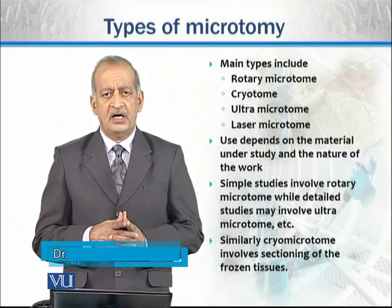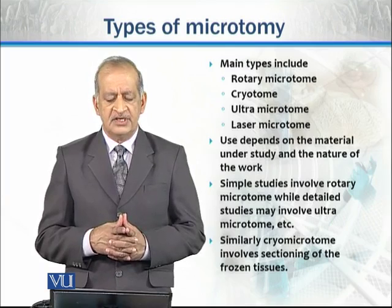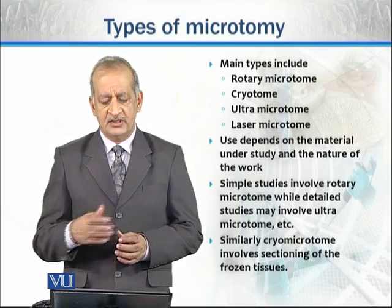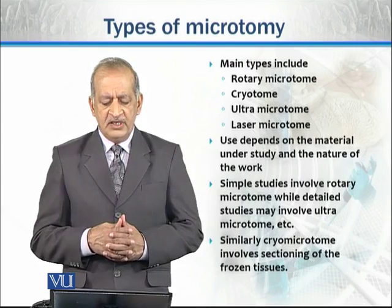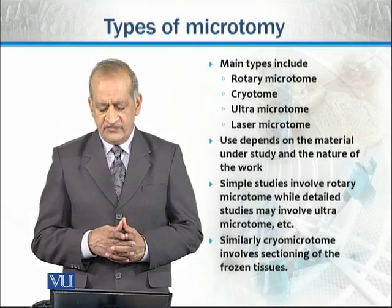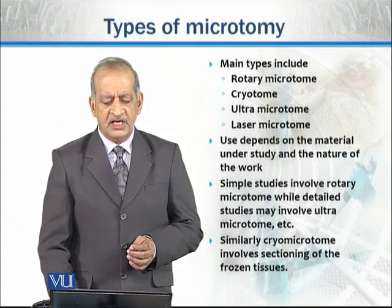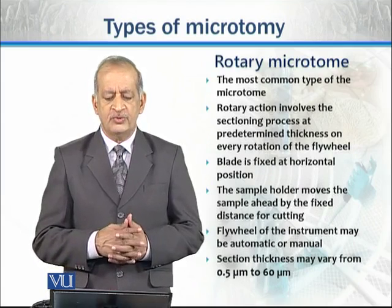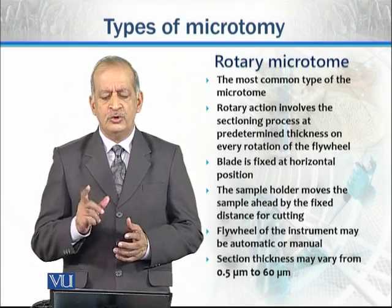Simple studies generally involve the rotary microtome, while detailed studies may involve other microtomes like the ultramicrotome or laser microtome. Similarly, the cryomicrotome is used for sectioning frozen tissues. We will now discuss two main types: the rotary microtome and the ultramicrotome.